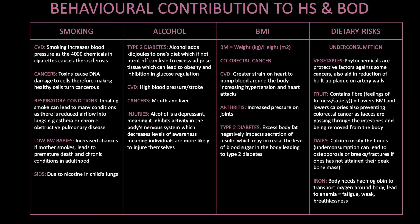Behavioural contribution to health status and burden of disease. We look at smoking, alcohol, body mass index and dietary risks. Smoking contributes to cardiovascular disease — smoking increases blood pressure as the 4,000 chemicals in cigarettes cause atherosclerosis. Cancers — toxins cause DNA damage to cells, making healthy cells turn cancerous. Respiratory conditions — inhaling smoke can lead to reduced airflow into the lungs, for example asthma or chronic obstructive pulmonary disease. Low birth weight babies — there are increased chances if the mother smokes, leading to premature death and chronic conditions in adulthood. SIDS can also result due to nicotine in the child's lungs if the mother smoked during pregnancy.